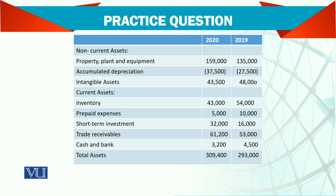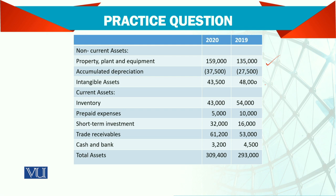Non-current assets are there: property, plant, and current assets. We have property, plant with accumulated depreciation, and we have intangible assets. Intangible assets are non-current assets which don't have physical substance — like goodwill, which is the good name of a business. Patent copyrights are a simple right, so they don't have physical form, but still we pay for it, and if we pay for it, it's an outflow.